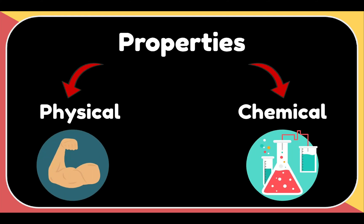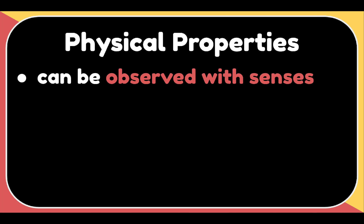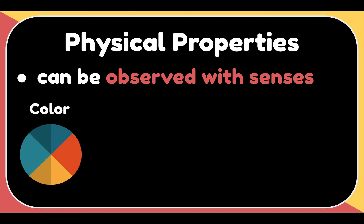So let's talk about physical properties first. A physical property can usually be observed with our senses. Physical properties include color, which is the quality of an object or substance with respect to the reflection of light.